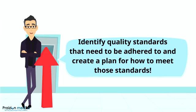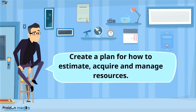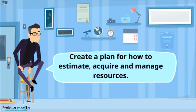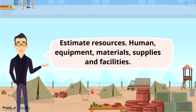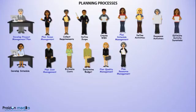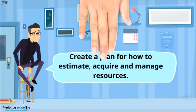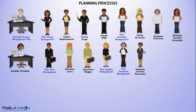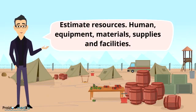The next process takes us to the resource management knowledge area. The first process is Plan Resource Management, and we obtain a resource management plan — a plan for how to estimate resources, acquire resources, develop the human resources, manage the human resources, and control the physical resources. The next process is Estimate Activity Resources, where the resources needed for the project — human, equipment, materials, supplies, and facilities — are estimated.